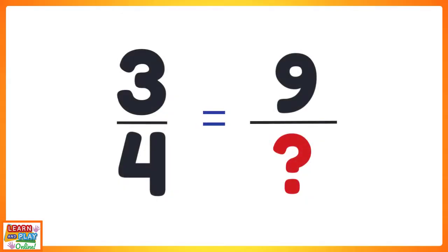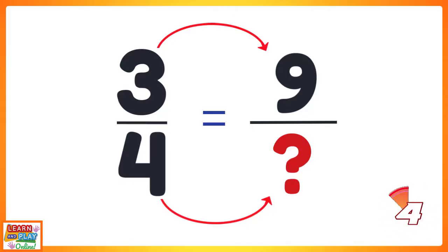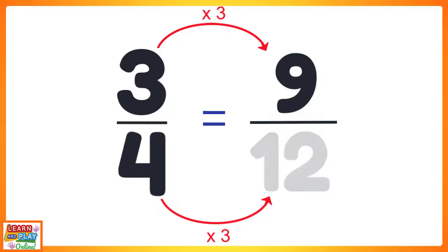This time you will find another equivalent fraction for three quarters, but the numerator has already been given to you, and it is nine. Your job is to find out what the denominator should be. Remember: what you do to the top, you must do the same to the bottom. Think about the relationship between the numerators — how do you get from the number three to the number nine? To get from three to nine, you had to multiply the numerator by three, so three times three is nine. Since you have to do the same to the denominator, four times three equals twelve. So three quarters is equivalent to nine twelfths.